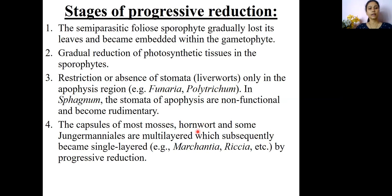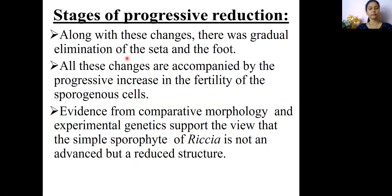The capsules of most mosses and Jungermanniales are multi-layered, which have subsequently become single-layered in Riccia or Marchantia due to progressive reduction. Along with these changes, there was also gradual elimination of seta and foot from Funaria as we move towards Riccia.